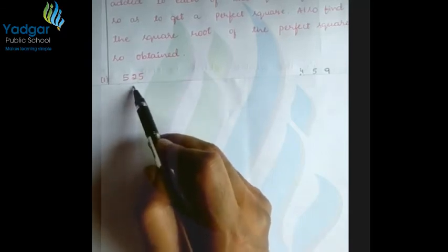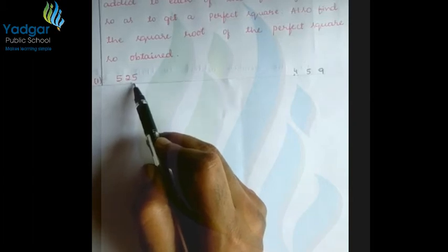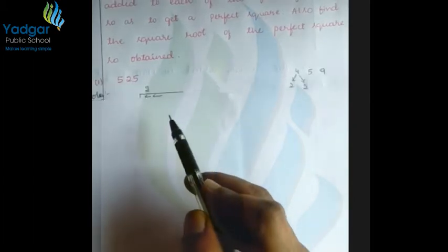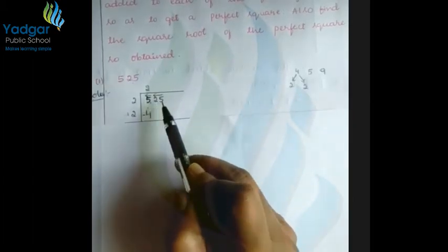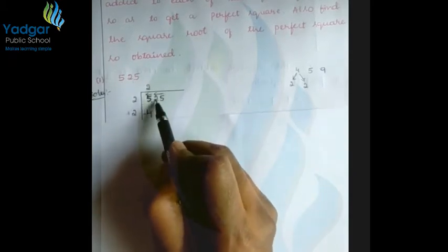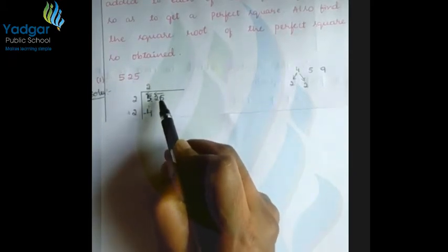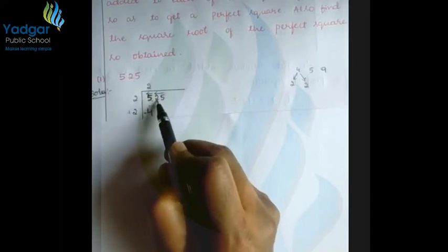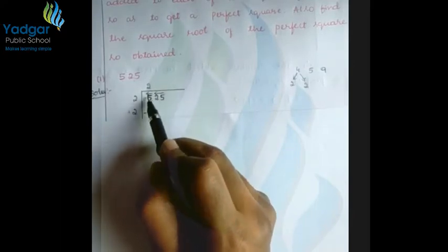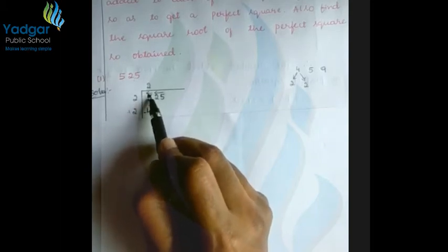You already know how to solve using the division method. For 525, before solving, you have to group the digits from the right side in pairs of two. So 525 is grouped as: '5' and '25' — the last two digits form one group, and the remaining single digit forms another group.